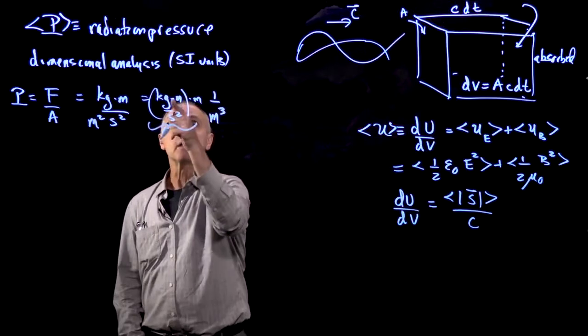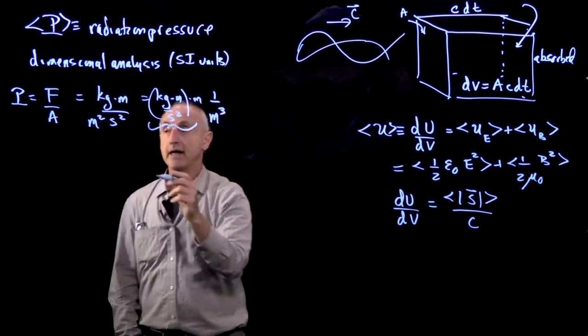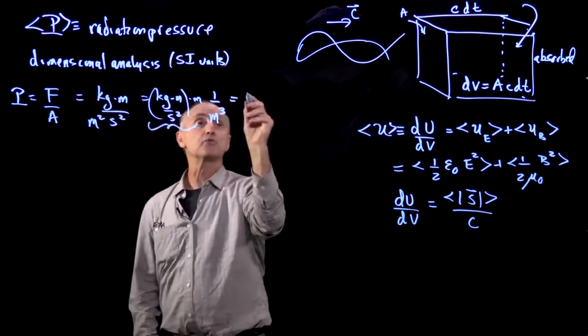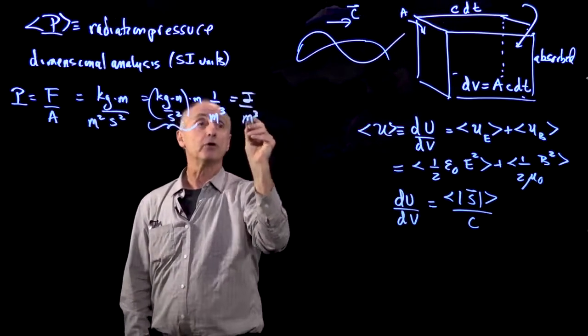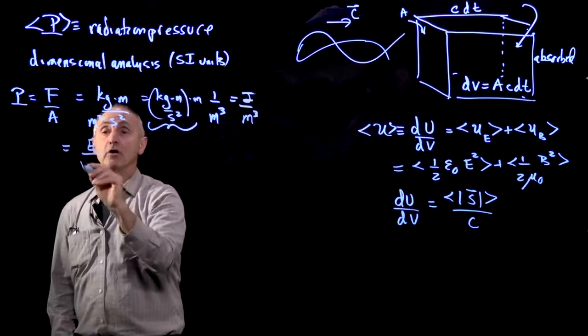If we notice that force times distance is energy, and in SI units that's joules, this becomes joules per cubic meter, or that is energy per volume.